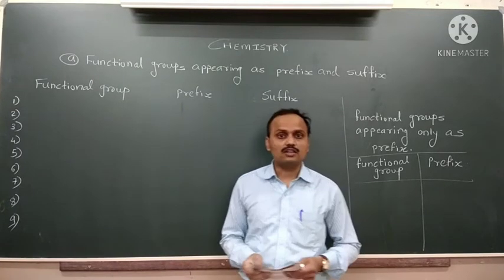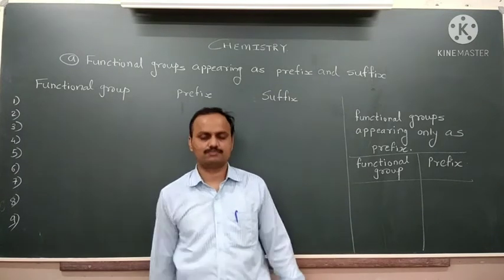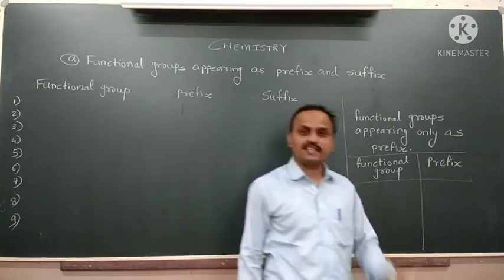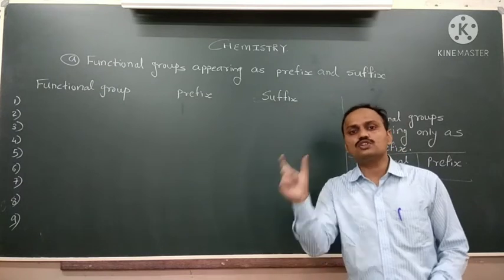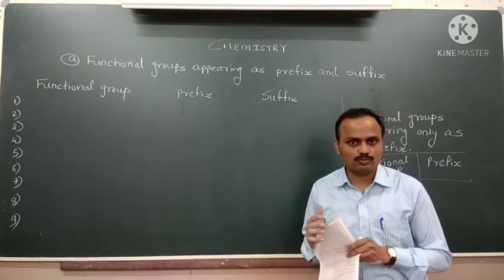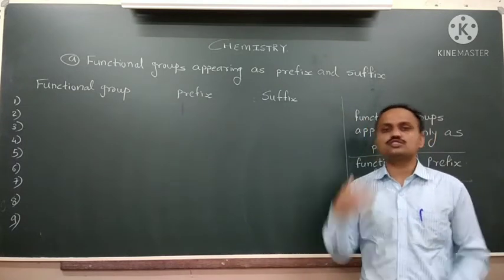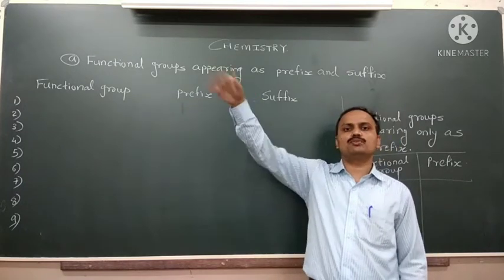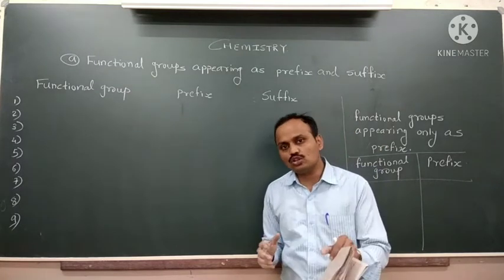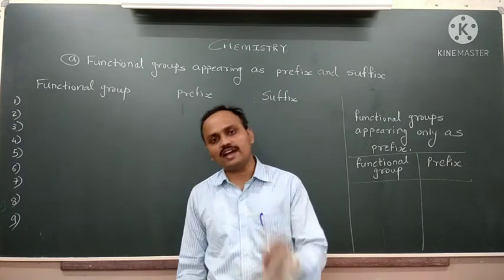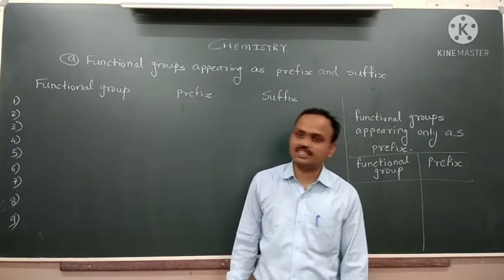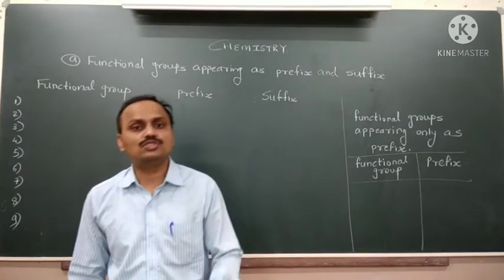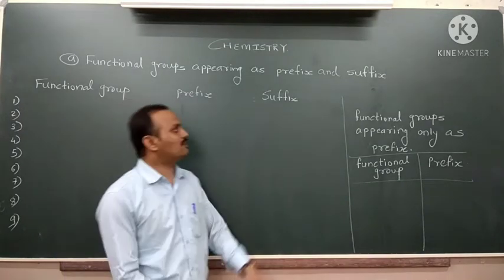If there are two functional groups present in a compound, such compounds are called polyfunctional compounds. We then decide which functional group acts as the substituent and which is the parent functional group. The functional group or branch acting as the substituent has its name written as a prefix, while the longest chain or the parent functional group has its name written as a suffix.